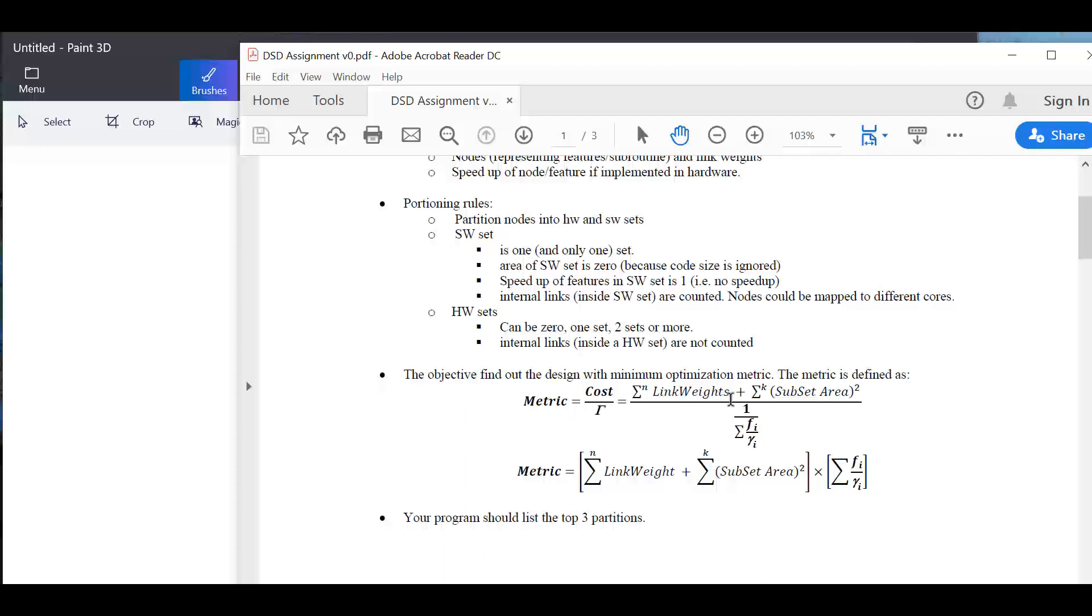This is the metric function. The metric function is the ratio between cost and speedup, and the cost adds up the link weights and the area. Let's go over those rules that dictate the area for the hardware and the software. In terms of the single software set that you must have, you can have only one and one only software set. The area of this set is zero because we are going to ignore the code size. The speedup of the features that are mapped to the software set is one, meaning no speedup.